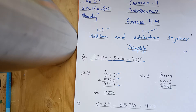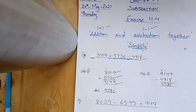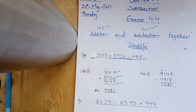We are on exercise 4.4. Here I have taken some examples for you. How do we learn addition and subtraction together? We call it simplify. Now let's go to the question. We have given you an example.